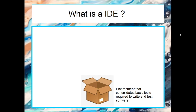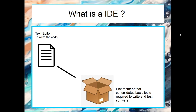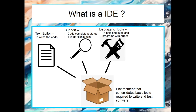A good way to think about an IDE is to think of it as a software box which contains all the basic tools that we need to write and test software. It will have a text editor where we can write down all the code for our program, but it will also have additional support — for example, different colors for different keywords so it will be easier to read.